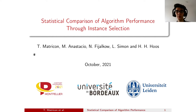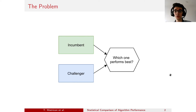Hi and welcome everyone. I'm Thé-Matricon and I'll be presenting our work: Statistical Comparison of Algorithm Performance through Instance Selection. This is a joint work between the library at Bordeaux and the LIACS at Leiden University. Our work focuses on tackling the following problem which arises naturally in many situations: comparing the performances of two algorithms on a set of instances.